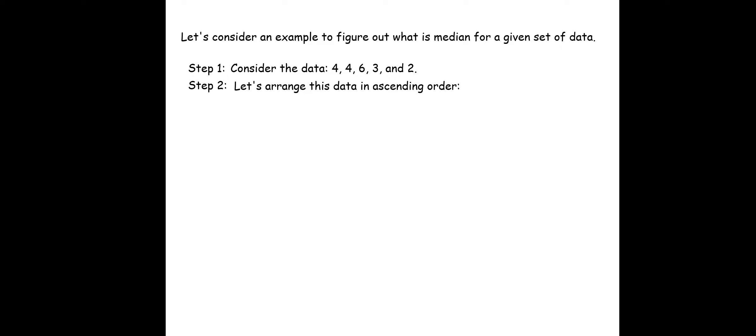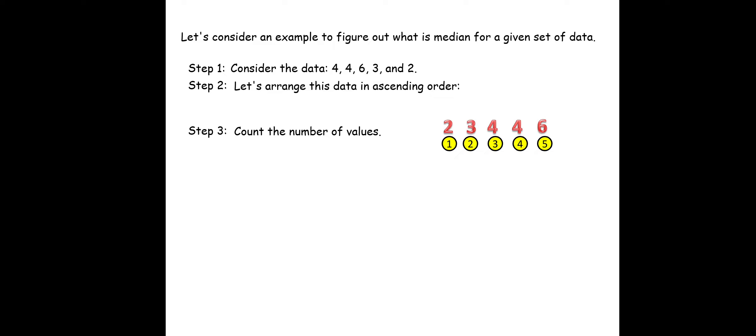First, let's arrange this data in ascending order: 2, 3, 4, 4, and 6. We have arranged these data in ascending order. Next step is to count the number of values. We have 1, 2, 3, 4, and 5 observations.